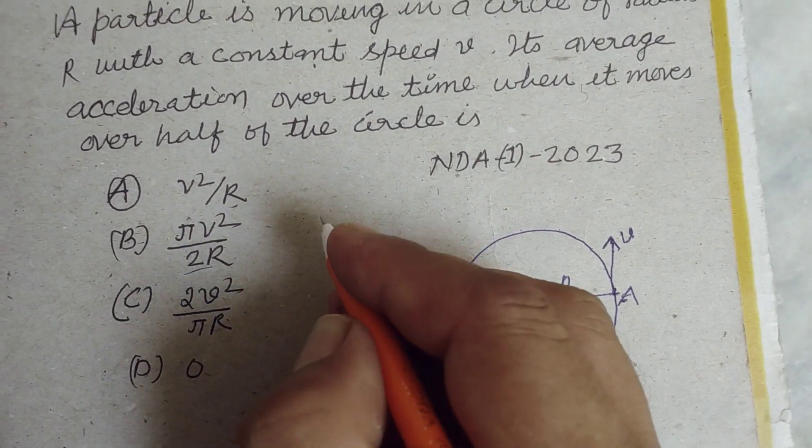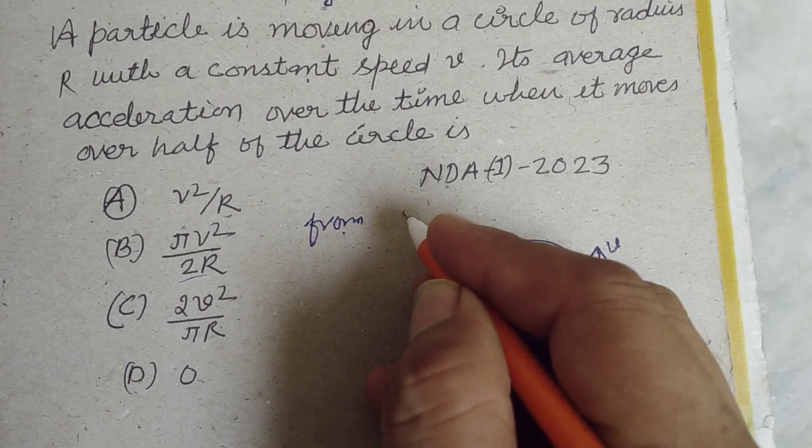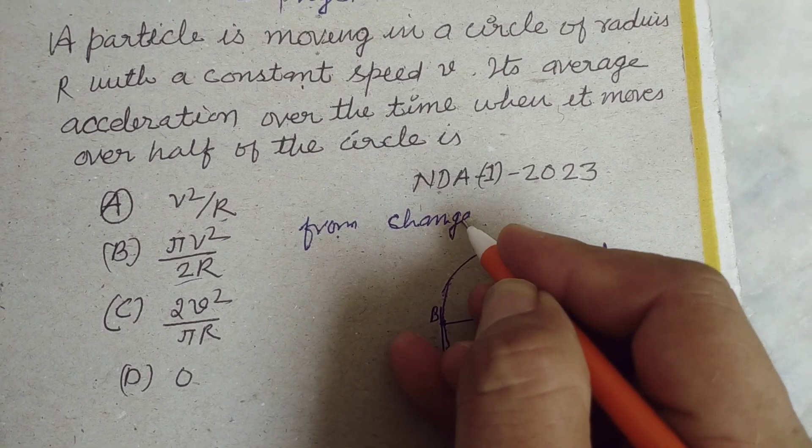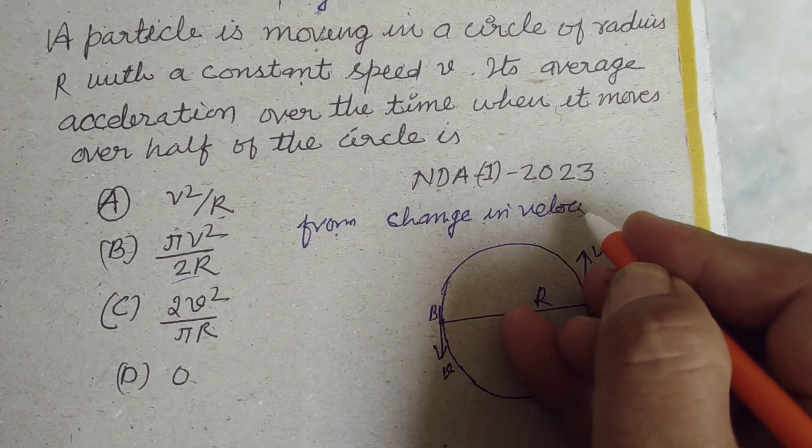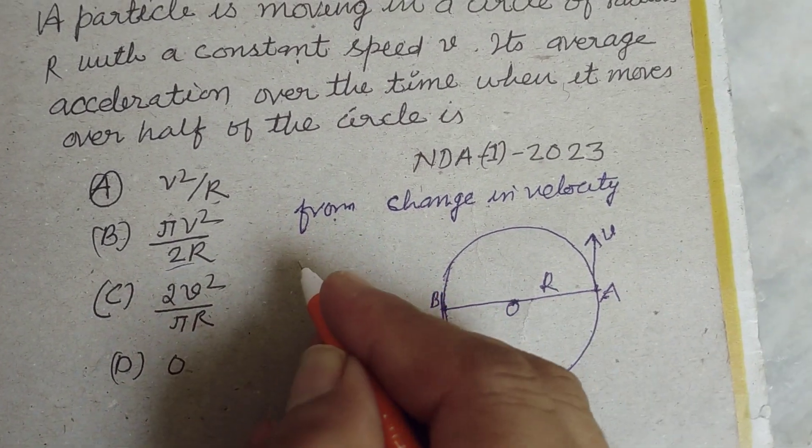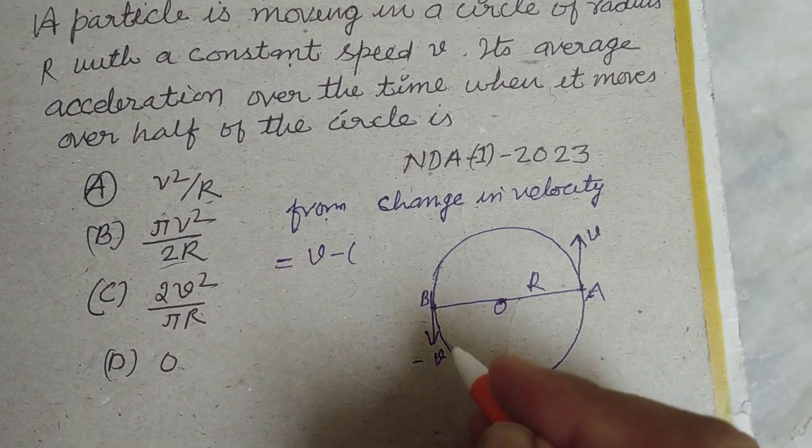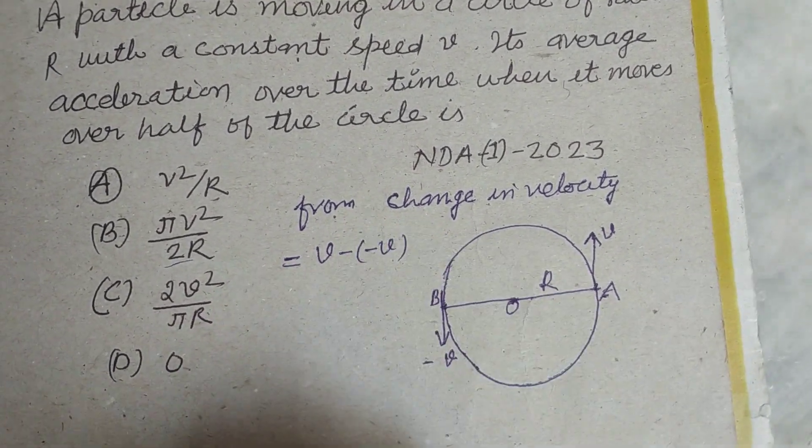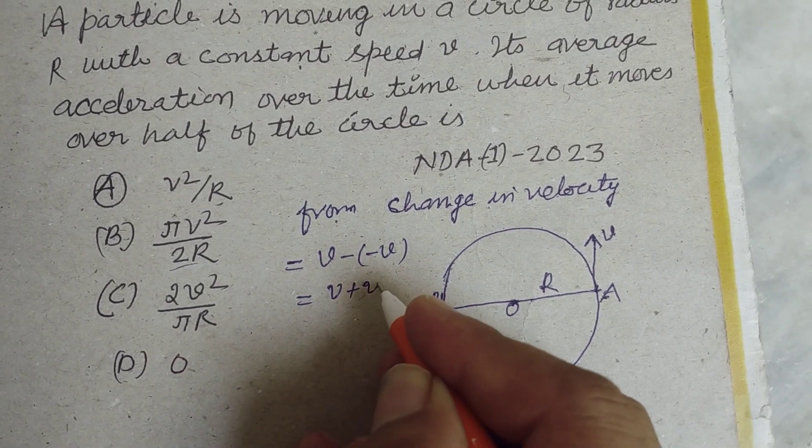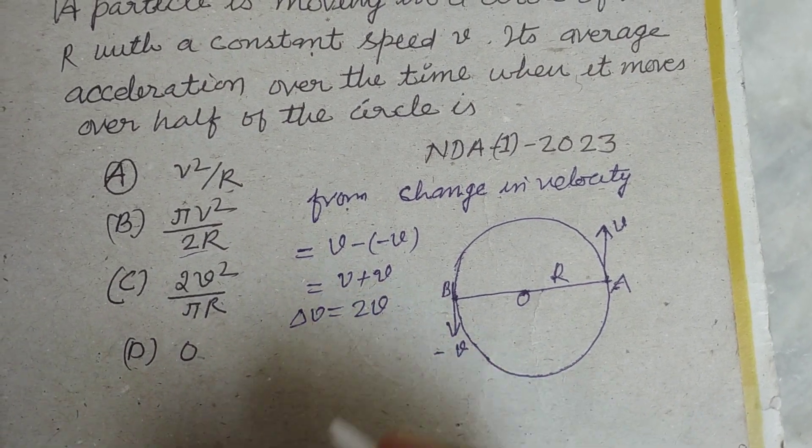So from the figure, change in speed - we can say change in velocity - because velocity has direction when speed has no direction. So change in velocity: V minus (this is minus V). So V minus minus V equals 2V. This is the change in velocity.